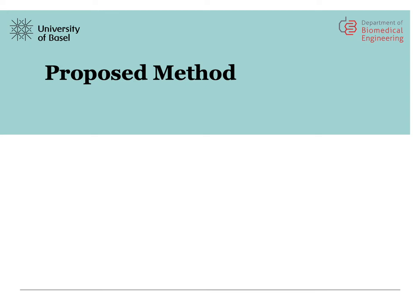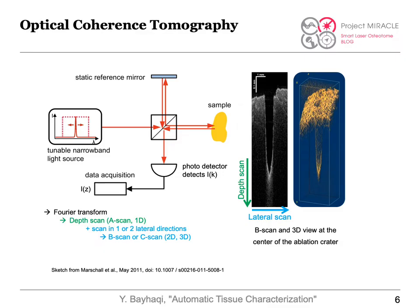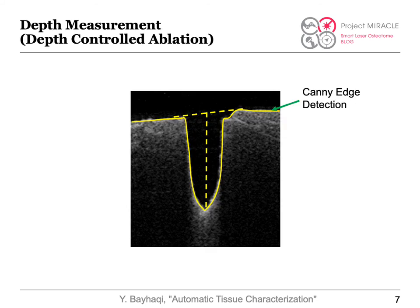In our proposed method, we apply an optical coherence tomography imaging system to monitor the ablation spot during the laser osteotomy. The OCT will provide a B-scan and also a 3D view of the center of the ablation. A key feature of OCT images is that we can achieve depth-controlled ablation, where the depth of the ablation can be measured by using Canny edge detection over the OCT image.